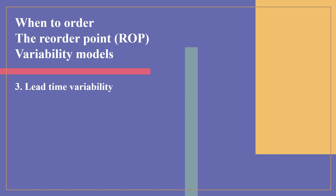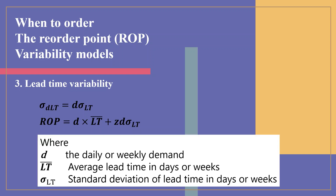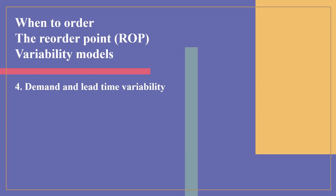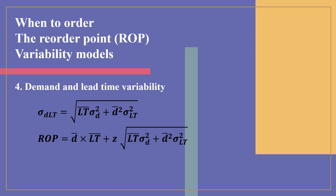If only lead time is variable, then sigma DLT equals D multiplied by sigma LT, and the reorder point is: ROP equals D multiplied by LT-bar plus Z multiplied by D multiplied by sigma LT, where D is daily or weekly demand, LT-bar is average lead time, and sigma LT is the standard deviation of lead time. If both demand and lead time are variable, then sigma DLT equals the square root of LT-bar multiplied by sigma D squared plus D-bar squared multiplied by sigma LT squared, and ROP equals D-bar multiplied by LT-bar plus Z multiplied by that square root expression.